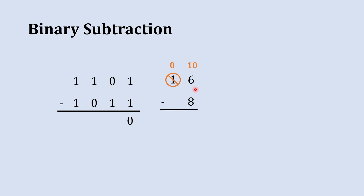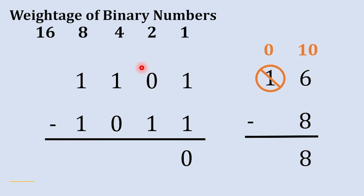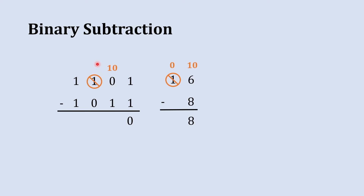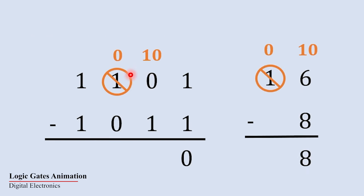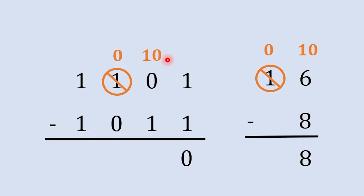After borrowing, ten plus six gives sixteen, and sixteen minus eight gives eight. In binary, when we borrow one from the next column, the weightage is two times higher than the previous column. So the borrowed one becomes two, and two in binary is written as one-zero (10). That is why when we borrow one from the next column it becomes one-zero. The original column is now zero, and we subtract one from one-zero (which equals two), giving an answer of one.